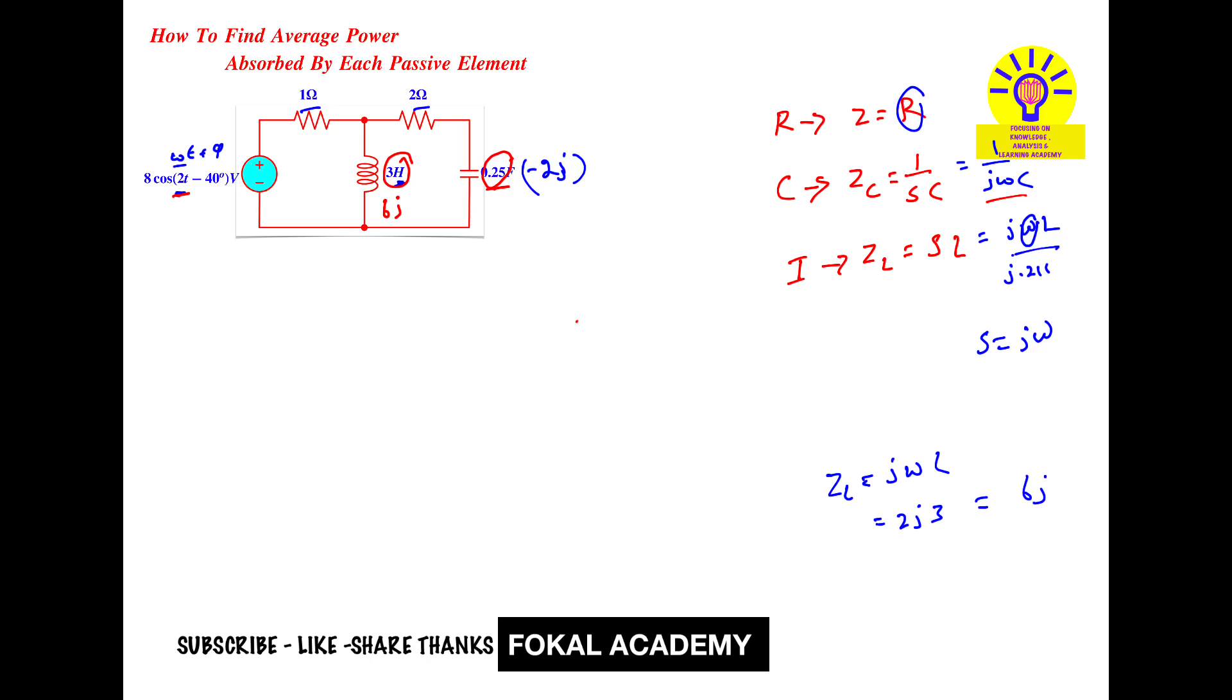Now all passive elements are in the frequency domain. The source has amplitude 8 and phase angle -40°. We can easily find average power. For that, we need currents in the two branches. In the inductor and capacitor, average power equals zero, so we only need to find average power in the two resistors.